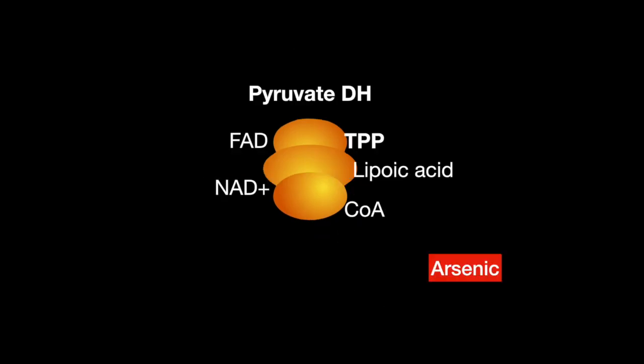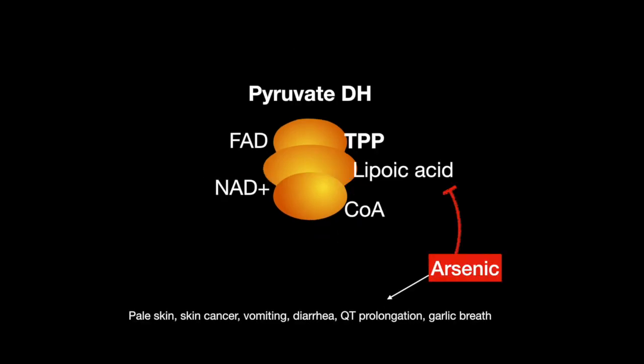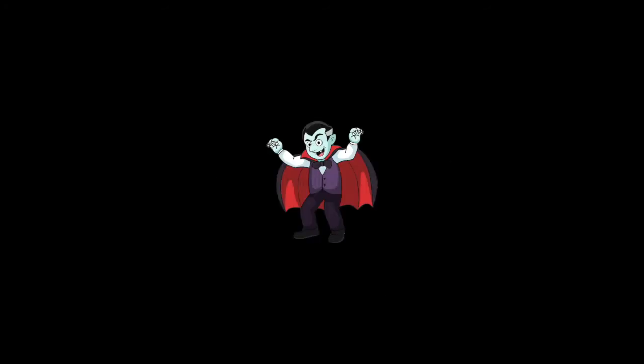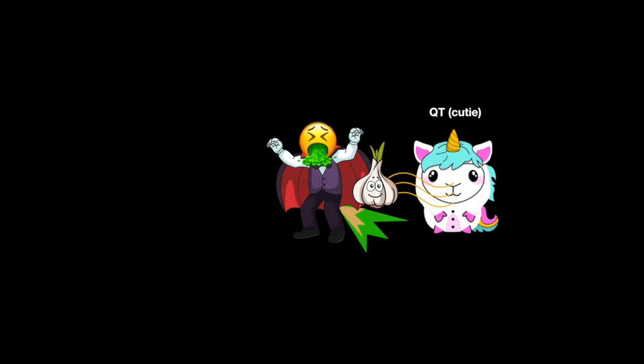The toxin arsenic inhibits lipoic acid, causing the symptoms: pigmentary skin changes, skin cancer, vomiting, diarrhea, QT prolongation, and garlic breath. If someone has arsenic poisoning, they look like a vampire vomiting and having diarrhea, running away from a QT with garlic breath.